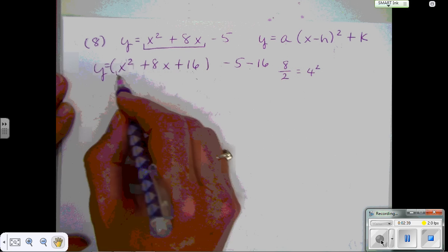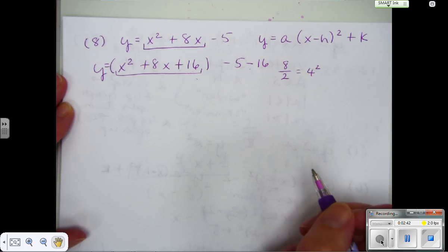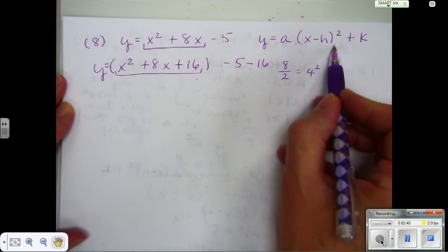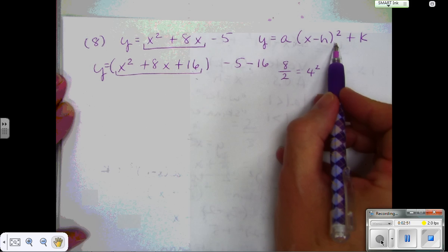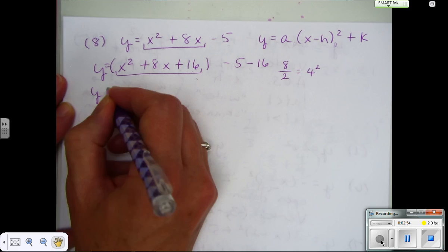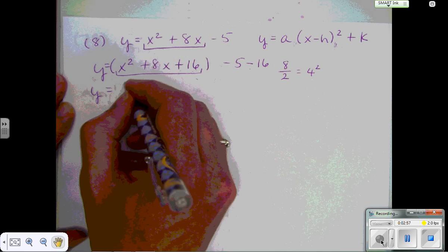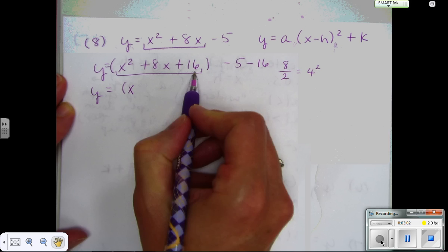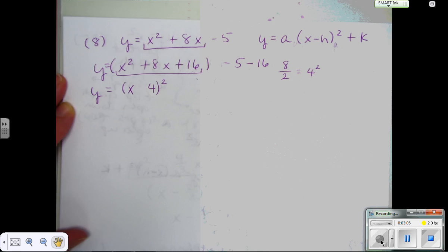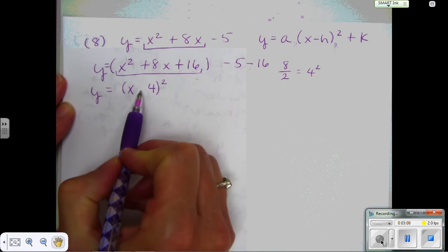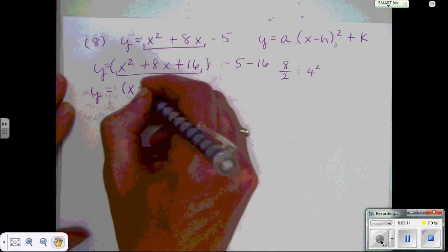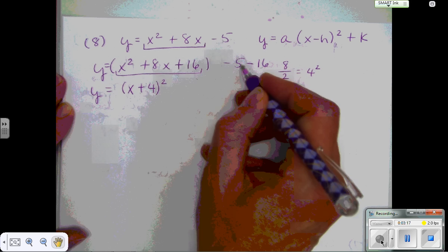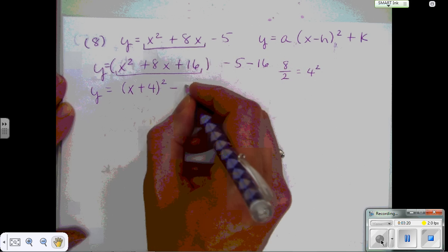Now I have this perfect square trinomial in the parentheses, and I can factor that into a binomial square. So that's going to help me get this part of the quadratic, the x minus h part. I factor it just like we've been factoring perfect square trinomials. Take the square root of the first term. Take the square root of the constant. Put a little squared exponent out there. And the sign that goes in between is the sign of the linear term. And then outside, I'm going to combine my negative 5 and negative 16, and that is negative 21.